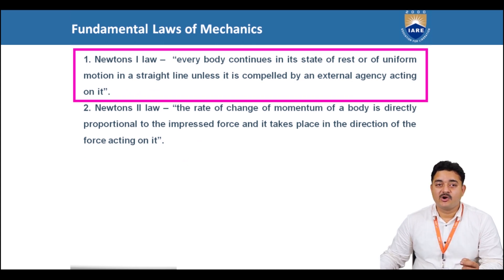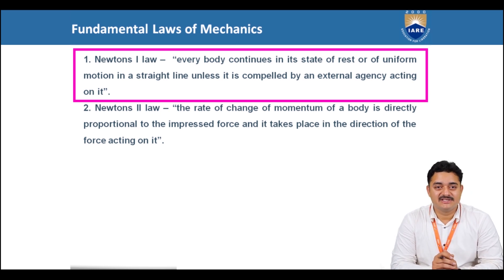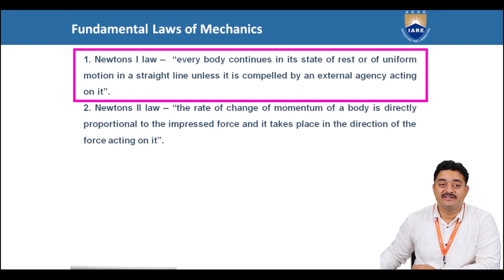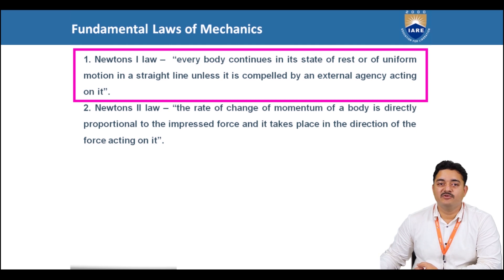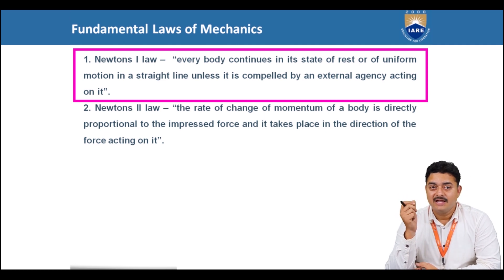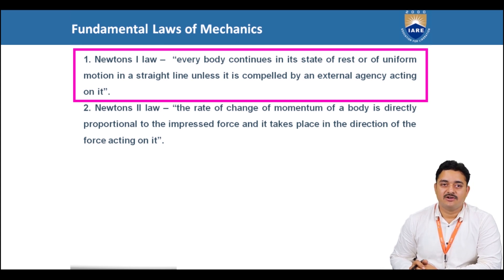Newton's first law states that every body continues in its state of rest or of uniform motion in a straight line unless it is compelled by an external agency acting on it. This gives us an idea that unless a force is acted upon, the body will continue to stay in its current state of movement or rest. The state of the body to continue its current mode is termed as inertia. This can be easily understood by imagining a body in outer space — when moving, it continues in the same straight path until another body obstructs it or an external force, pressure, or torque changes its direction or velocity.